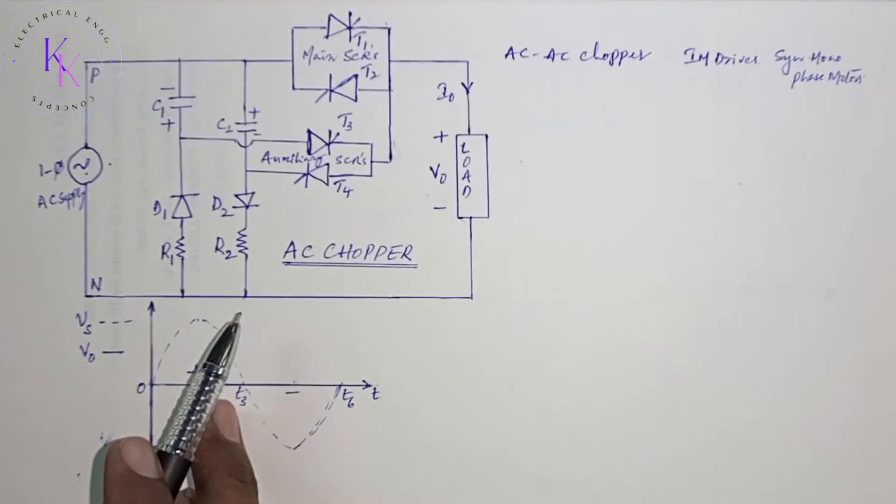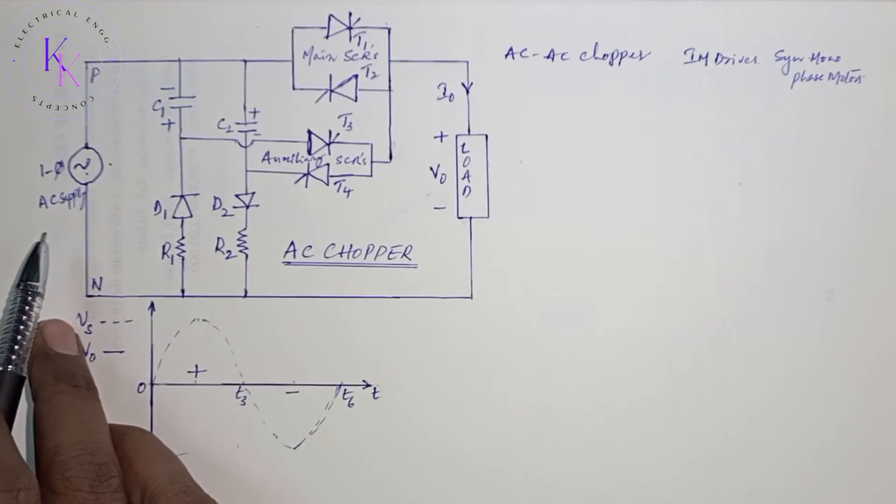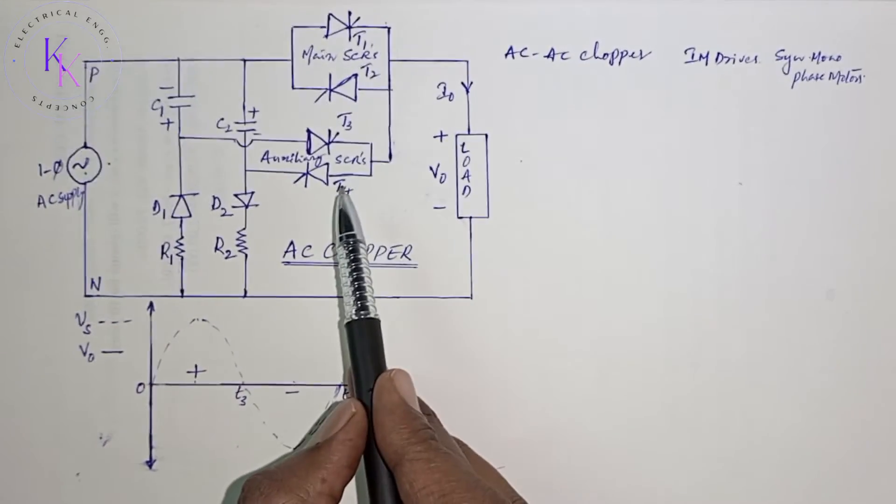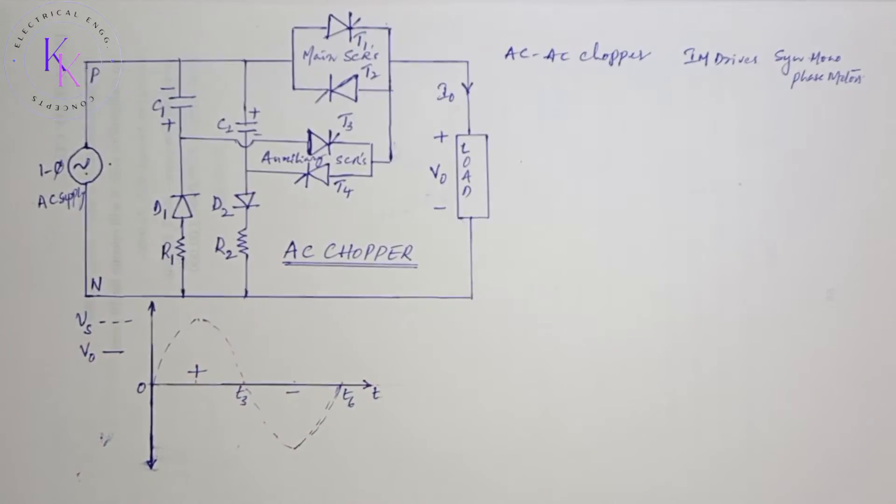This is the circuit of AC chopper having single-phase AC input and main thyristors T1 and T2, and T3 and T4 are the auxiliary thyristors. C1 and C2 are the commutation capacitors connected to the load.